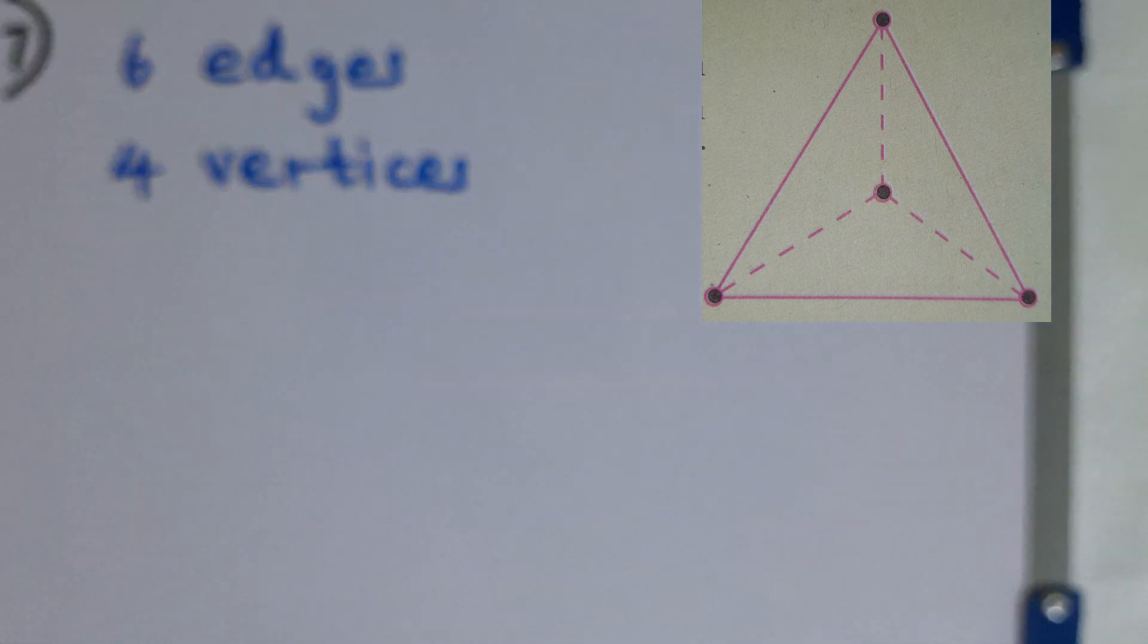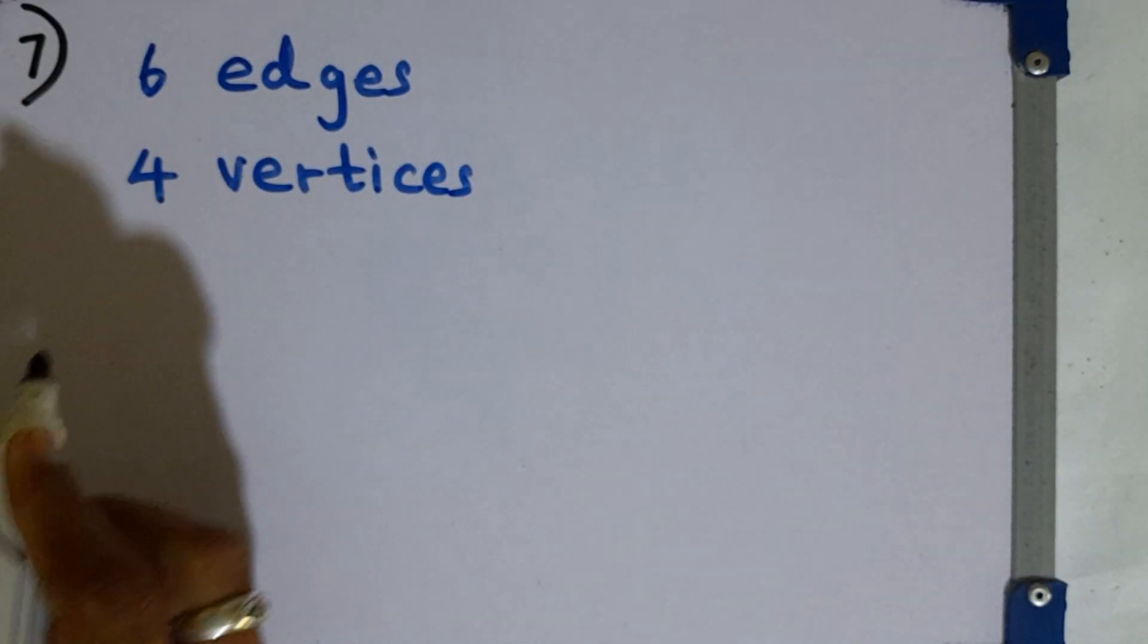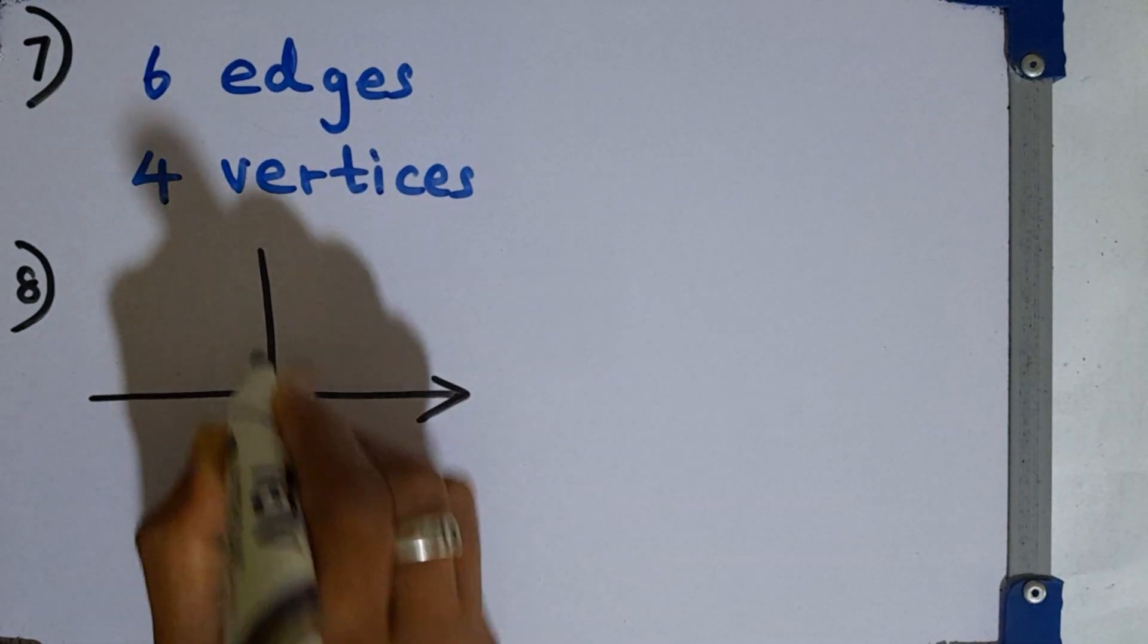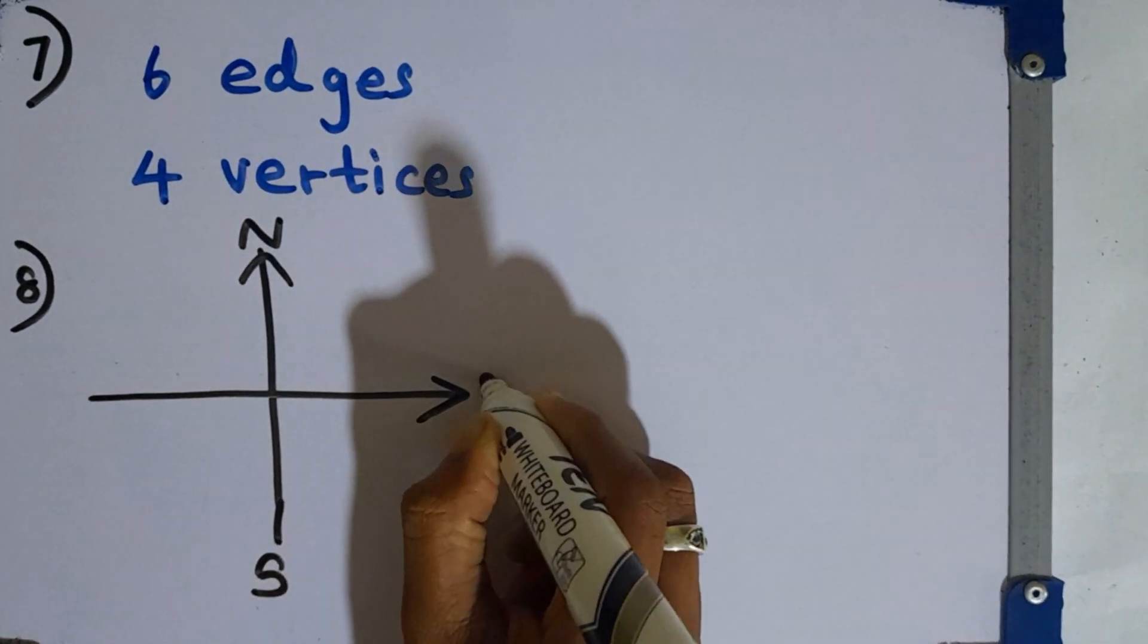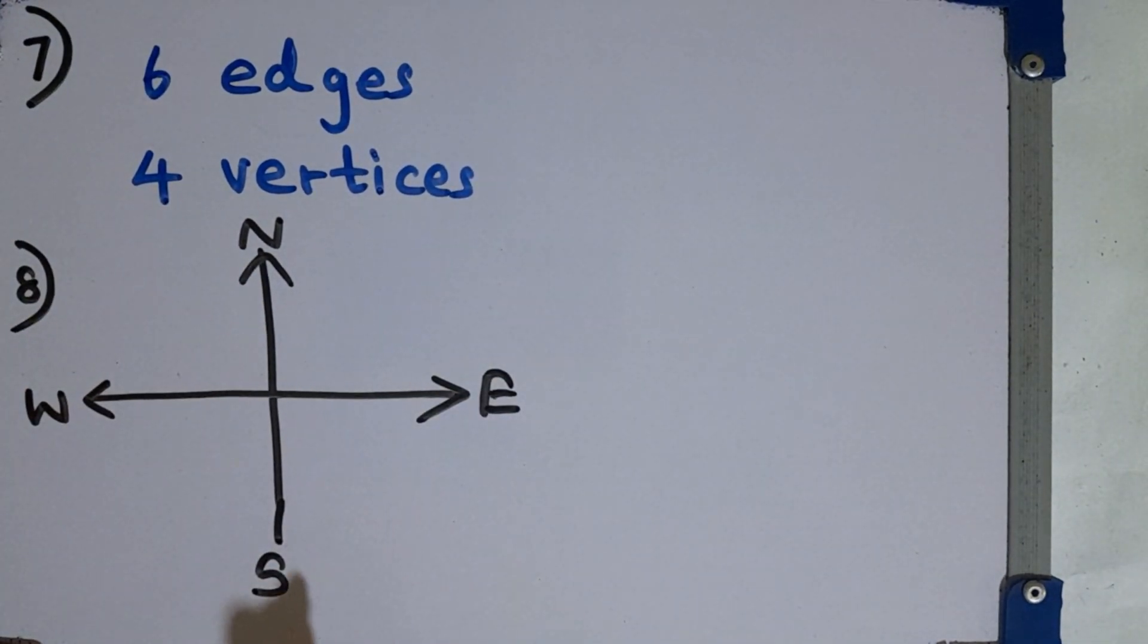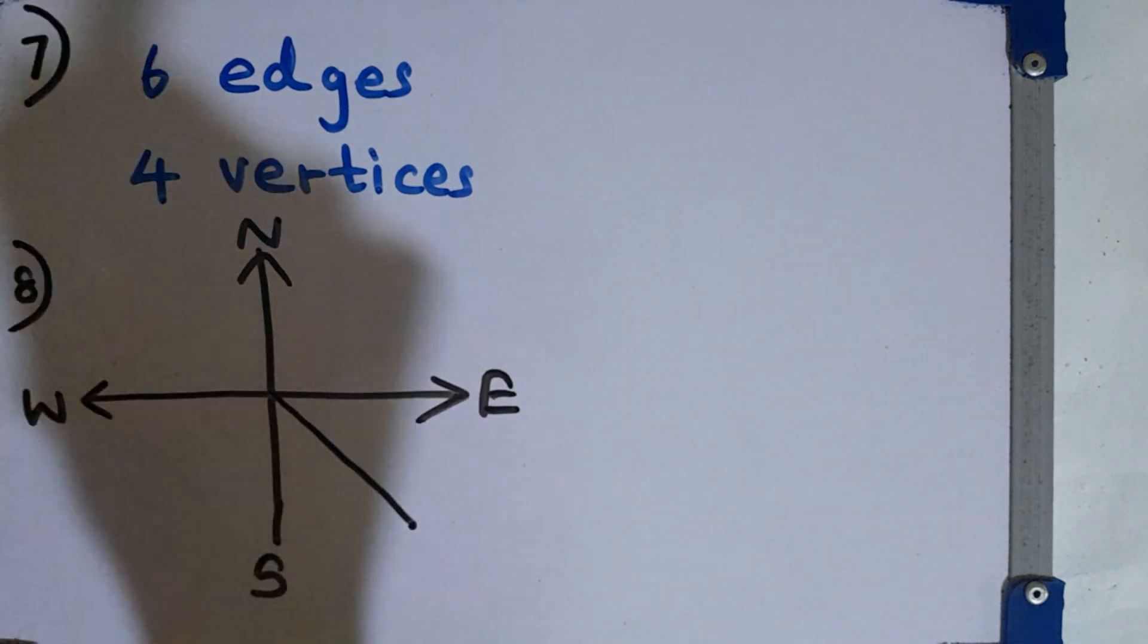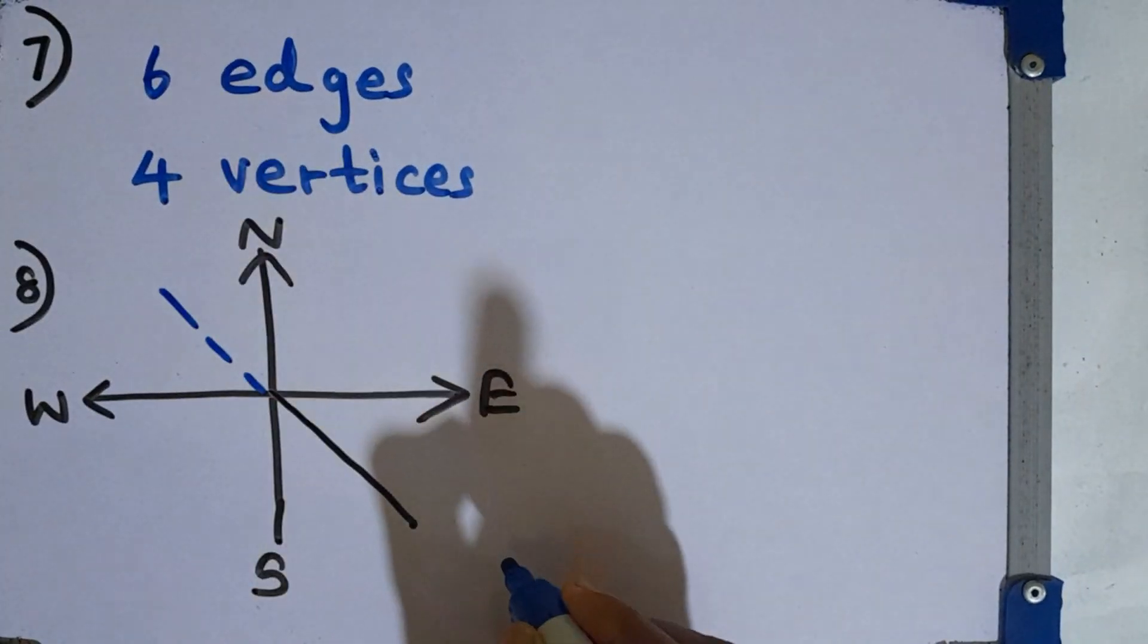Then question number 8. What is the opposite direction to the southeast? If you take the direction chart, this is the north direction, this is south, this is east and this is west. Then where is southeast? Southeast is here. So the opposite direction will be north-west.